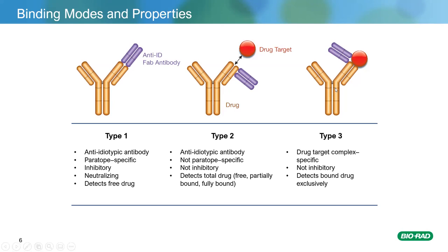Finally, the type 3 anti-idiotype is complex-specific. It will not bind the drug or the drug target in isolation, but will bind the unique epitopes that exist only when the drug target is in complex with the drug antibody — recognizing the junction between the two. With type 1, 2, and 3 anti-idiotypes, we can essentially provide customers a toolbox to measure free drug, total drug, and bound drug.